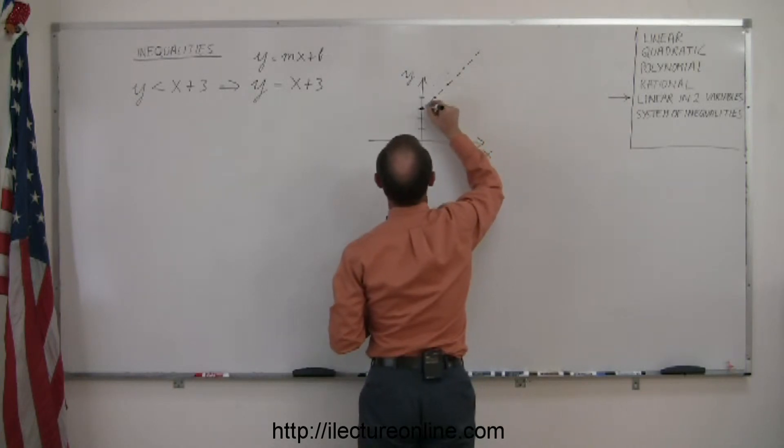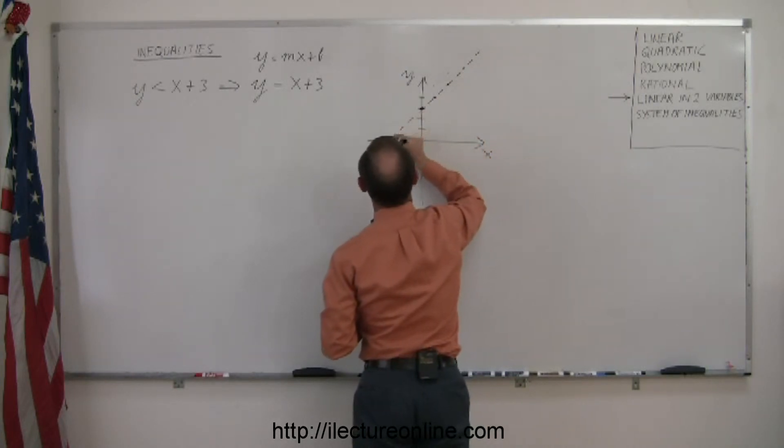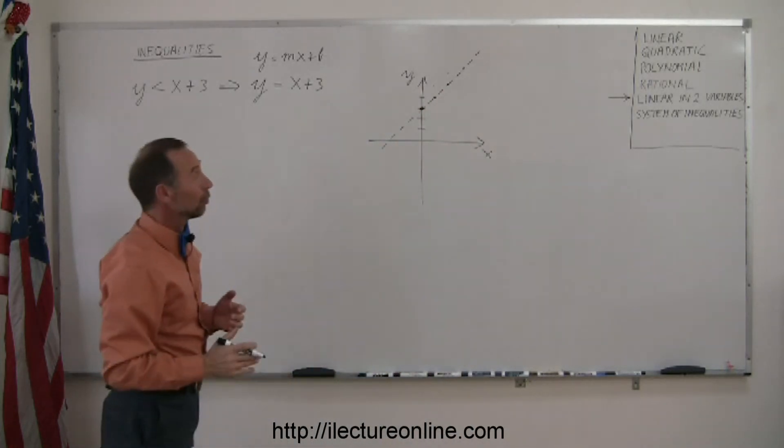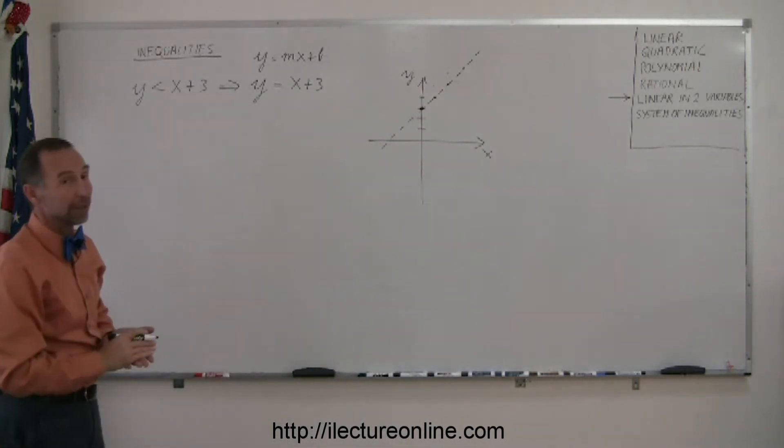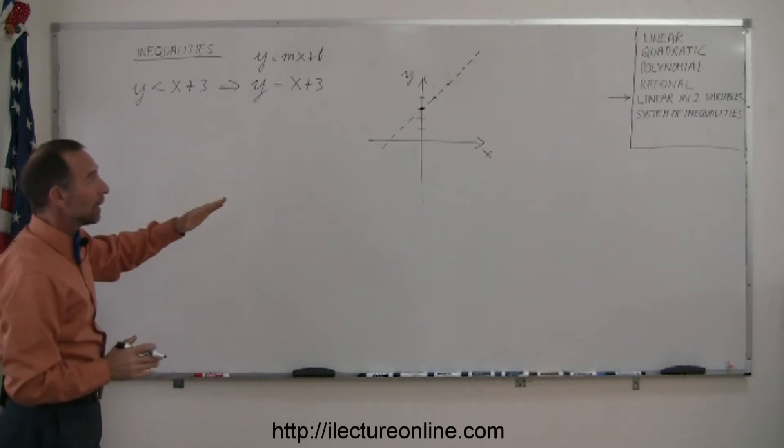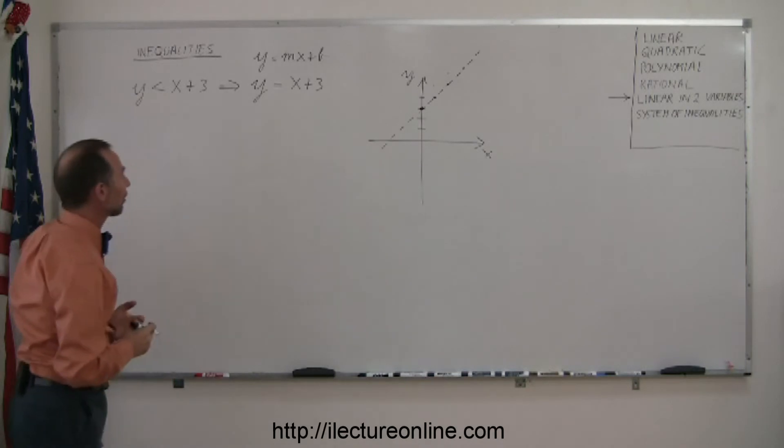The dashed line indicates the boundary between the region that satisfies the inequality and the region that does not satisfy the inequality. We don't know yet which region it is, but the boundary is not included. So we drew a dashed line.